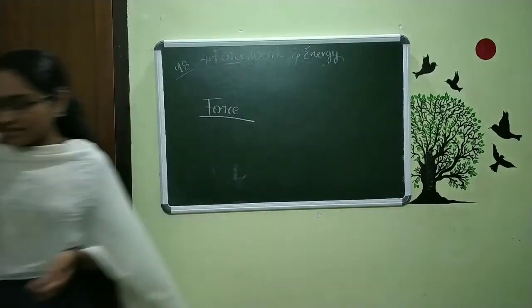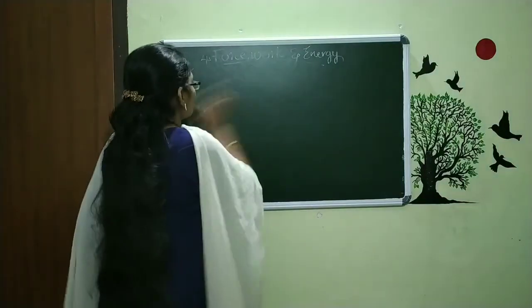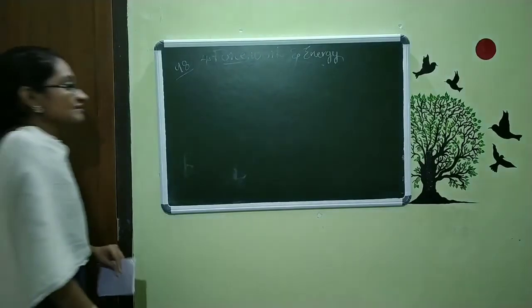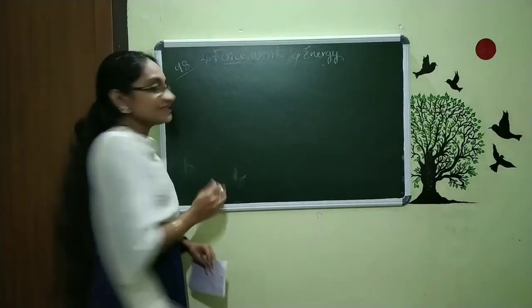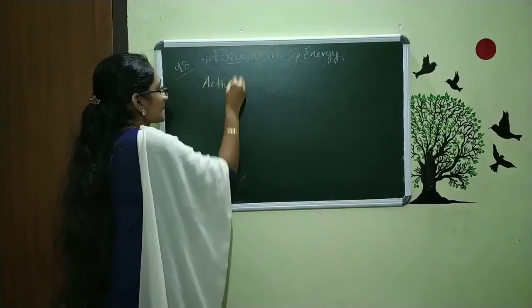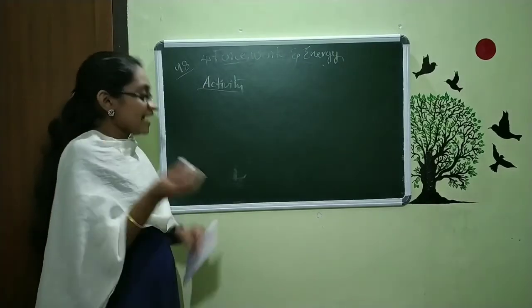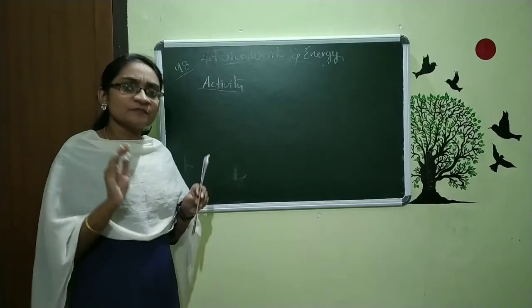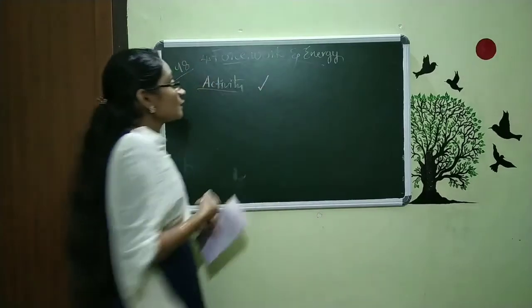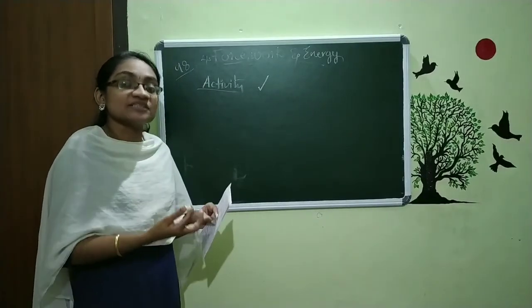This is one simple example that we can see — the force is active. Now, in your textbook you can see one activity. We can start our chapter by doing that activity. The activity is very simple. You want to do it in your textbook. You can see some sort of pictures. You want to tick which are the things having force acting.